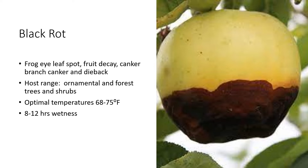The Botryosphaeria pathogen that causes Black Rot has a very wide host range. Both ornamental, fruit, and forest trees and shrubs are susceptible to infection. Optimal temperatures for infection and fungal activity are 68 to 75 degrees Fahrenheit with about 8 to 12 hours of wetness — whether from rain, dew, or fog — needed for this pathogen to be active and infective.